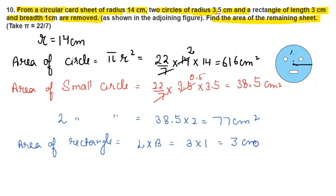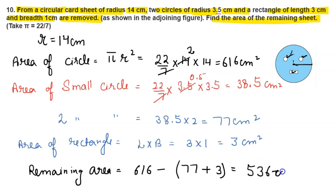The remaining area equals the total area minus the combined area of the two small circles and rectangle: 616 - (77 + 3) = 536 cm².